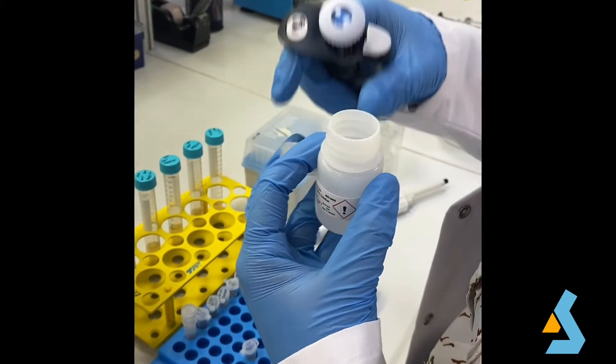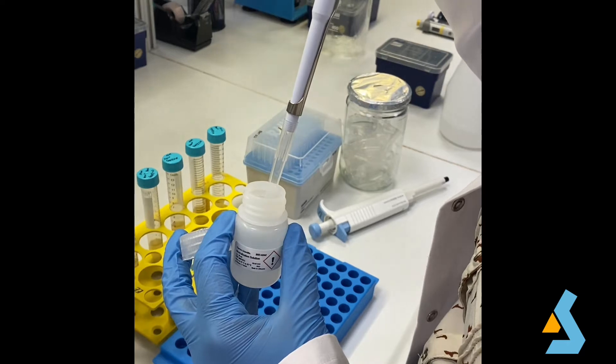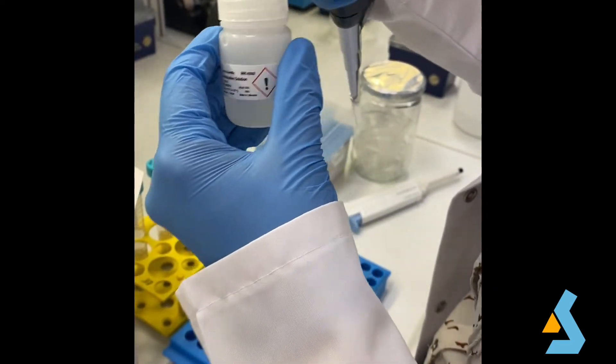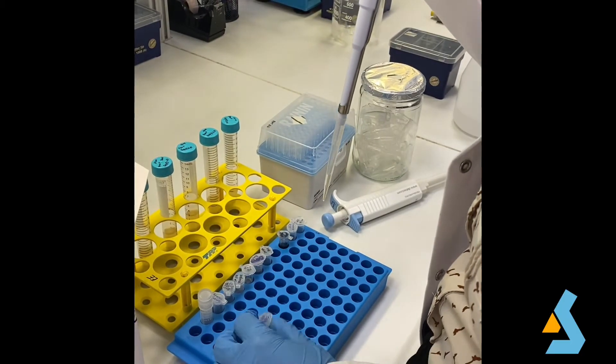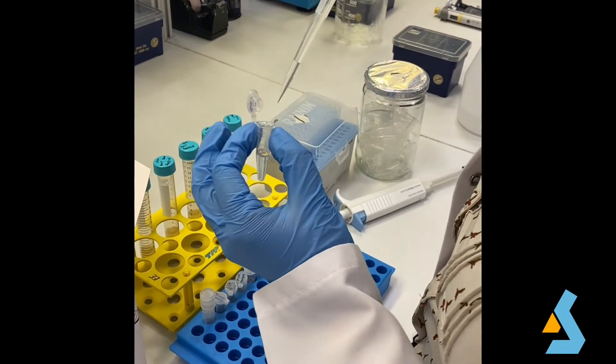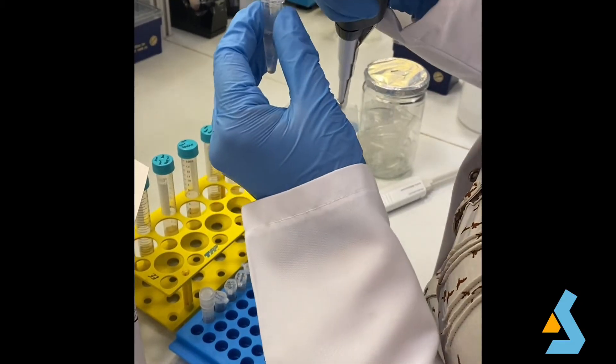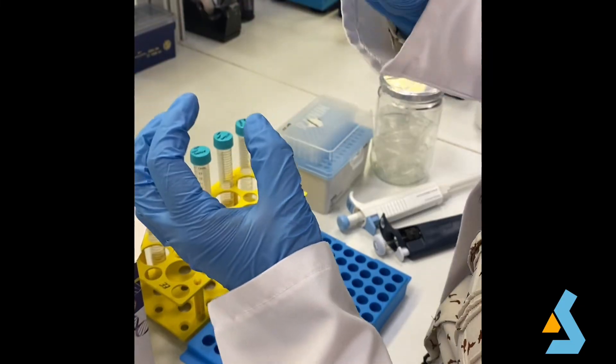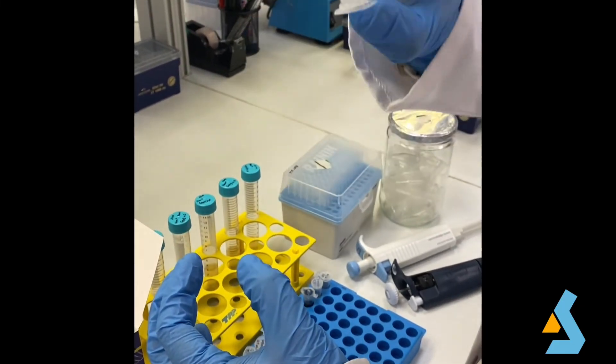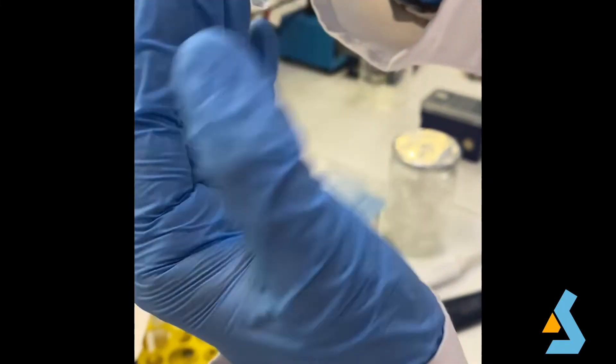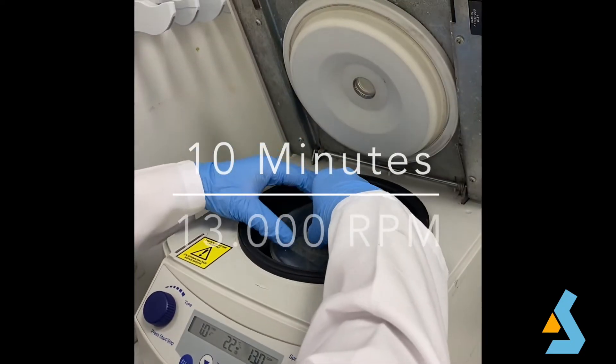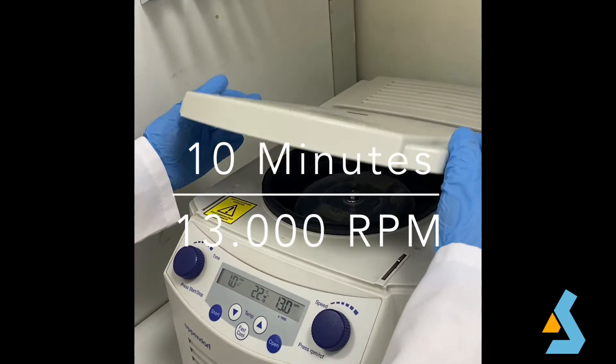Then 350 microliters of neutralization solution is added to the cell suspension to allow binding of plasmid DNA onto the silica membrane in the spin column. This buffer contains sodium ions and it neutralizes the negative charges on the DNA molecules, which enables DNA to bind to the silica membrane. For this, we must mix immediately and thoroughly by inverting the tube four to six times. The bacterial lysate should become cloudy. The tube should then be centrifuged for 10 minutes to pellet the cell debris.